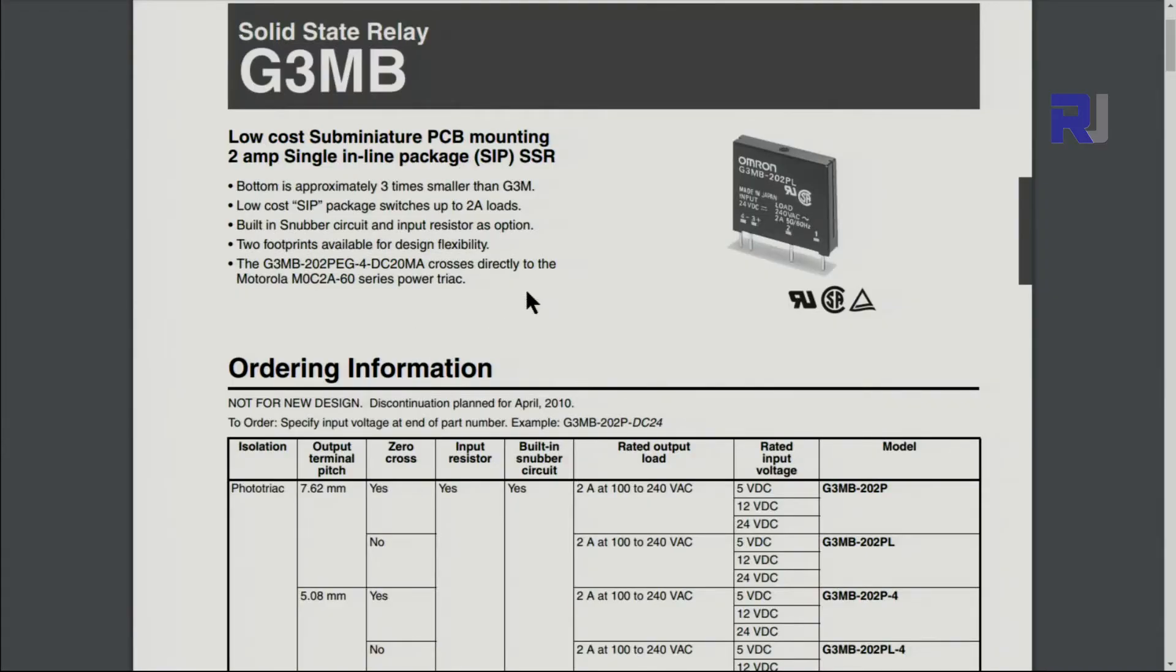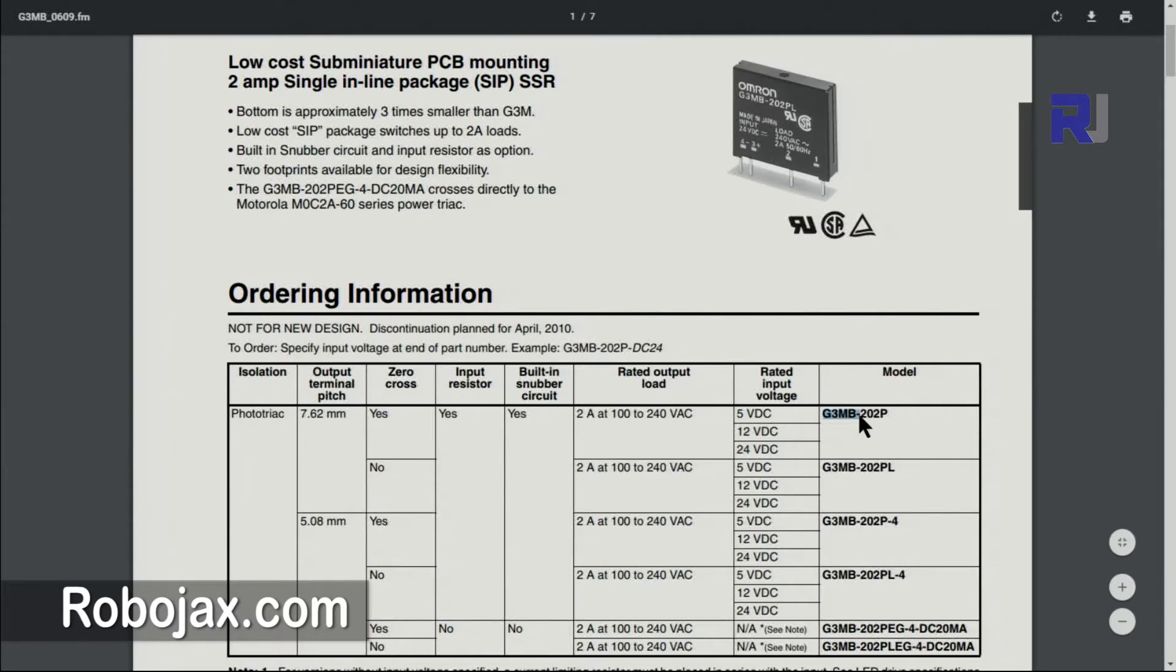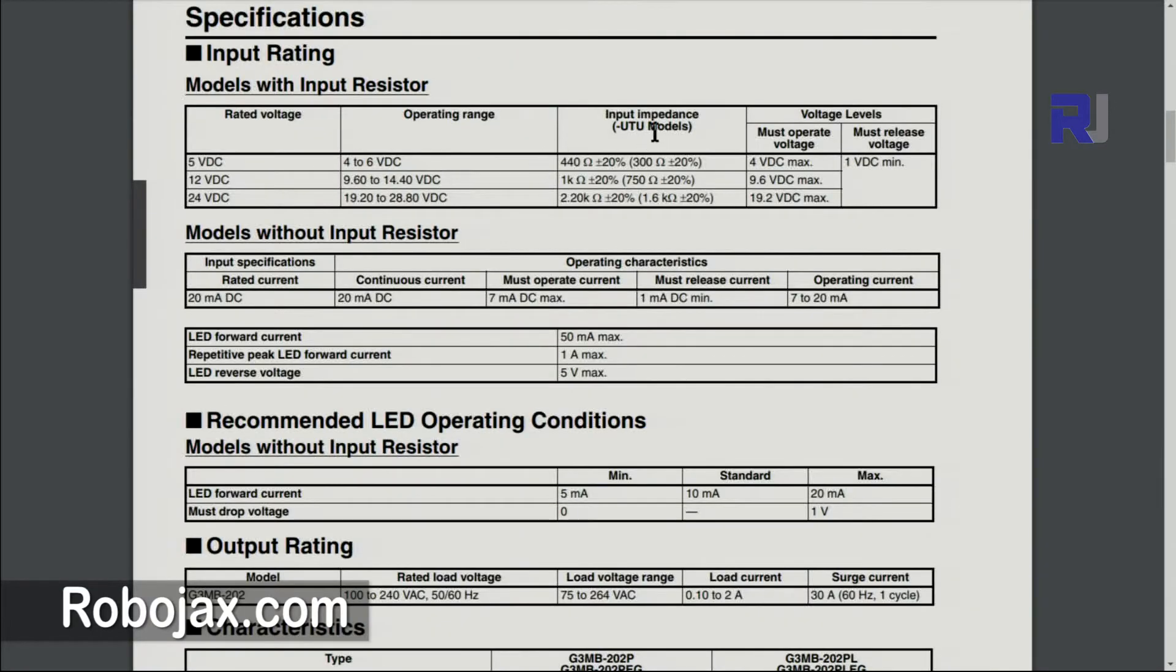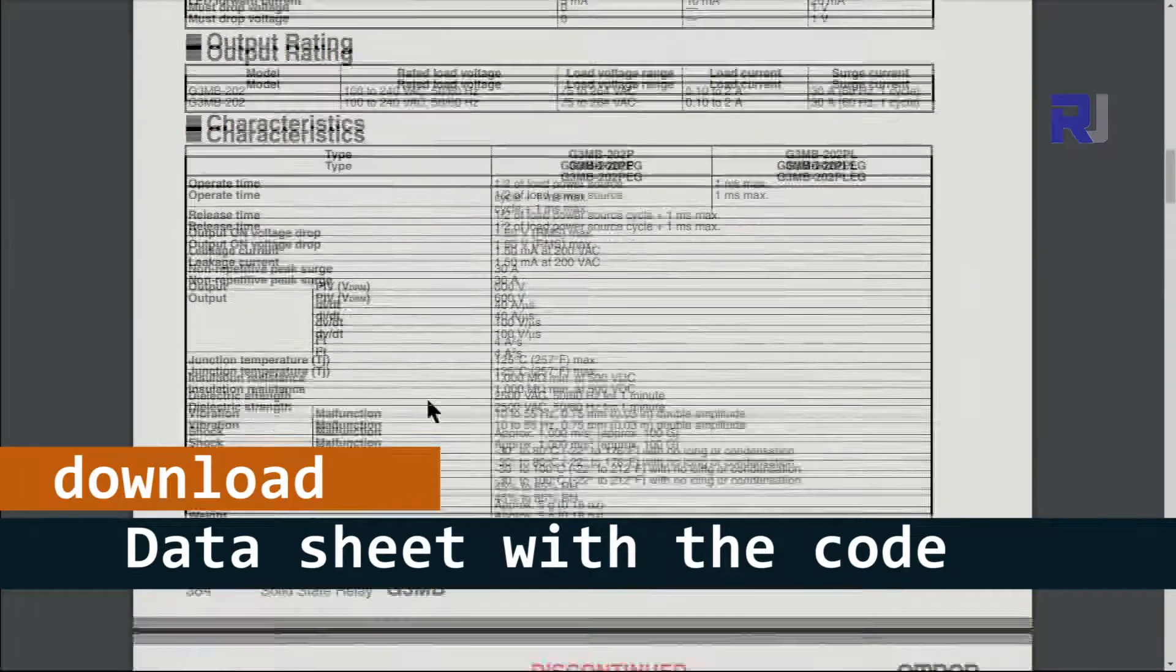Here is the datasheet for this model. G3MB is offered in different versions, so G3MB-202P is the model that I am showing. This one can have 5 volts, 12 volts, or 24 volts, which will be printed on the module. The module that I have is 5 volts. In terms of input impedance, this is 450 ohms. At 5 volts, operating current is 7 to 20 milliamperes, and there are other characteristics if you need them.